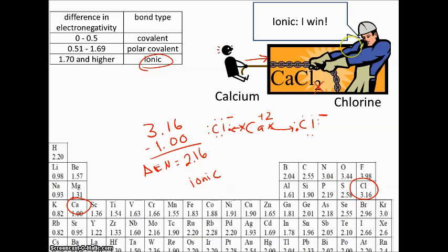So ionic sort of means I win. The more electronegative, the 3.16 wins, takes the electrons completely away from the weaker electronegative element, which would have been calcium in this case.